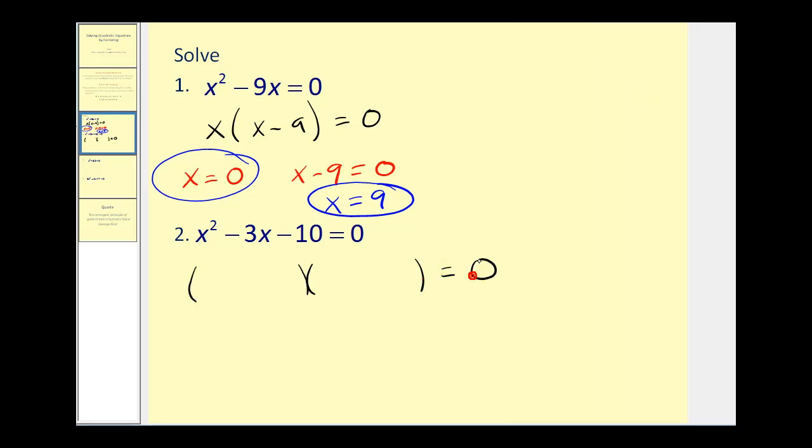Let's take a look at number two. The factors of x squared go in the first position. And the second position must be the factors of negative ten that add to negative three. That would be a negative five and a positive two.